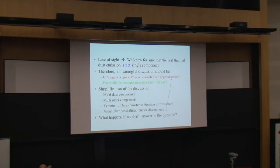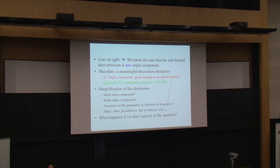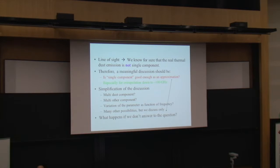Because we are looking deeply into space, we have integration along the line of sight. There's no reason to say that thermal dust coming from one kiloparsec is the same as thermal dust coming from 10 kiloparsecs. So we know that the thermal dust must be a multi-component. But this statement, while correct, is not very meaningful, because we don't require the thermal dust imaging to be exactly single-component — we only require it to be approximately single-component. So a meaningful discussion will be whether the single-component is good enough as an approximation.